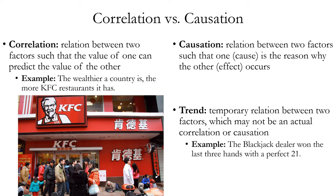In contrast to correlation, causation is a relation between two factors such that one — the cause — is the reason why the other occurs. Every causation also has a correlation; the only way one event can be the cause of another is if there is indeed a correlation between them. However, the fact that there is a correlation is a necessary condition for a causal relationship, but not a sufficient condition. This means all causations are correlations, but not all correlations are causations. There's also the concept of a trend: a temporary relation between two factors which may not be an actual correlation or causation. Example: the blackjack dealer won the last three hands with a perfect 21 — maybe it's just a temporary trend.